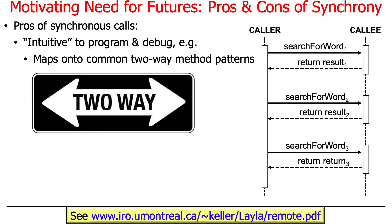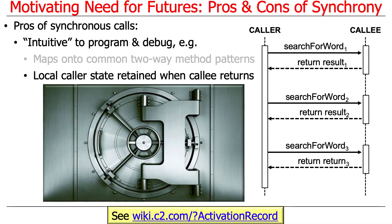Synchronous calls map nicely onto two-way calling patterns and two-way method patterns. You invoke a method, you pass some parameters, you get a result — what could be simpler? Another reason why this is easy to reason about is because the state of the local caller — whatever method is making the call — is retained and available when the callee returns. It's stored in something called an activation record, which you may learn about in a compiler course like CS270.